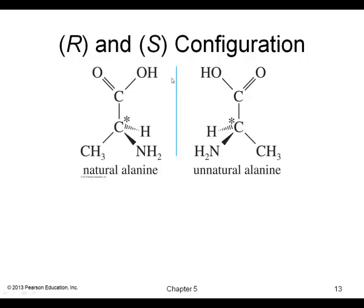Here, the chiral carbon has four different groups: CH₃, NH₂, hydrogen, and the acid group. This is the amino acid alanine, which is chiral. So it has a non-superimposable mirror image, and these two structures are enantiomers.